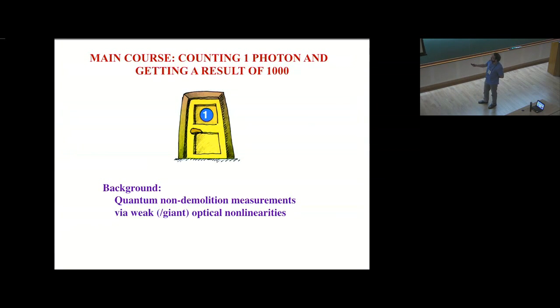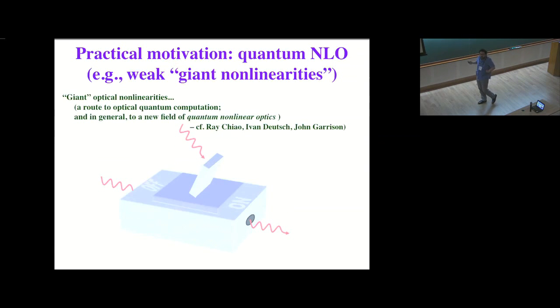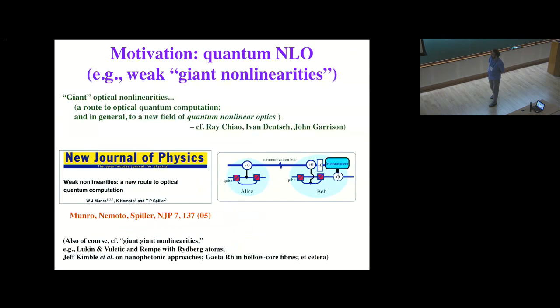Now let me get to our main course, counting one photon and getting a result of a thousand. And as I said, the experimental background here is trying to implement giant optical nonlinearities, also known as weak optical nonlinearities for historical reasons. Here's the practical motivation. I want to be able to do quantum nonlinear optics. I want to be able to see one photon interact with another, one photon flip a switch that determines whether or not a second photon gets transferred. This would be a new frontier in optical physics. And at the same time, this is what you need in order to make a quantum logic gate.